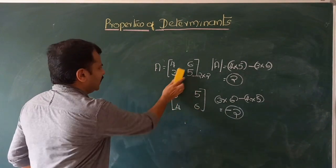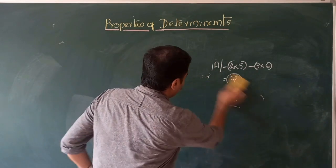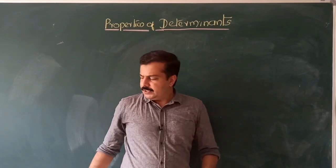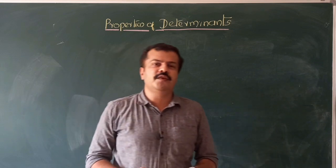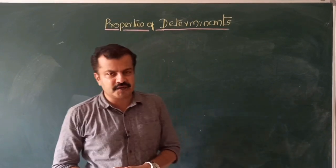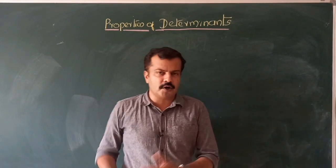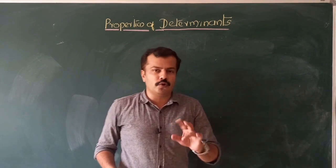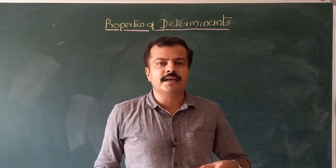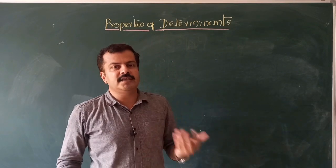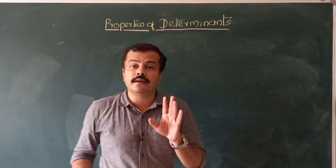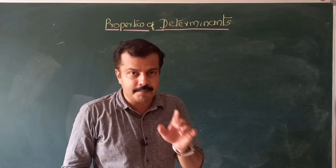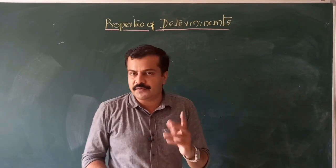So we have two properties here. The first property: the value of the determinant will not change even if we interchange all rows and columns (transpose). The second property: if we interchange any two rows or any two columns, it will alter the sign of the determinant but not the numerical value — 2 becomes −2, for example.